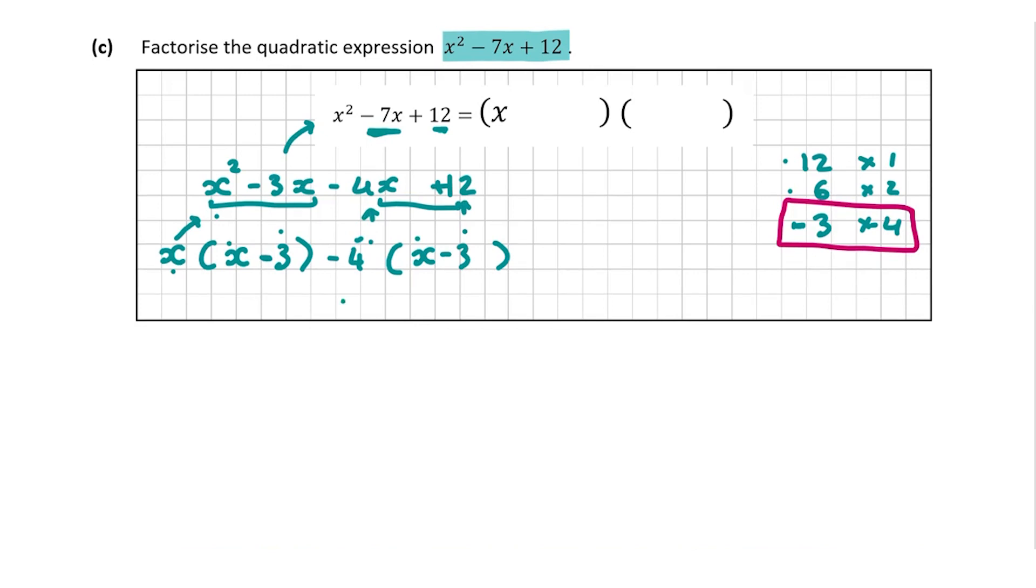So we're going to be left with x minus 4 because we have x minus 4 and then this bracket is the same as this bracket. So that's our other bracket. So to factorize it, we're left with x minus 4, x minus 3. So x minus 4, x minus 3. And that is our answer for question C.